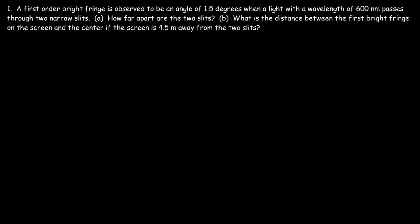In this video we're going to go over some practice problems associated with Young's double slit experiment. We have a first-order bright fringe observed at an angle of 1.5 degrees when light with a wavelength of 600 nanometers passes through two narrow slits. How far apart are the two slits?